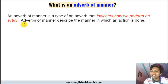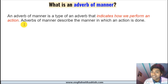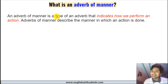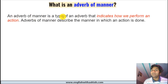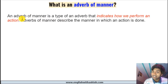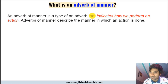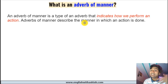All right everybody, the very first thing we'll do is understand what adverbs of manner are. An adverb of manner is a type of adverb — we say that because we have different types of adverbs in English. An adverb of manner is a type of adverb that indicates how we perform an action. It describes or indicates the manner in which an action is done.